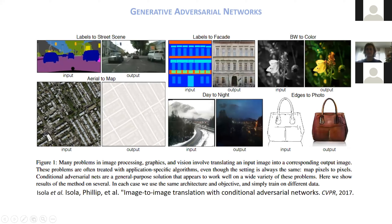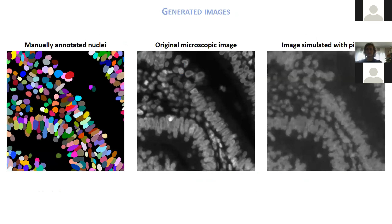Conditional GANs can be helpful because instead of cars or building façades, we can use nuclei masks and try to synthesize microscopic images. I trained pix2pix on the same 15 256×256 annotated image pairs and applied it to a new image. The original microscopic image and the pix2pix-simulated image are compared — it's not perfect, but it's somehow realistic and may be good enough to improve segmentation results.